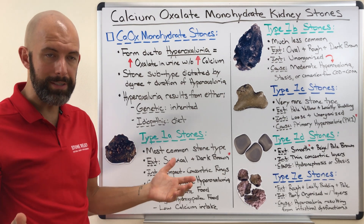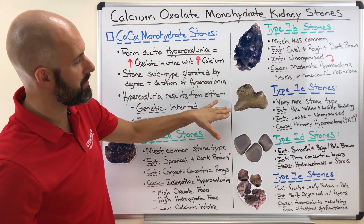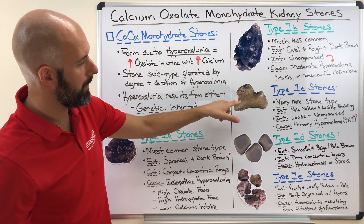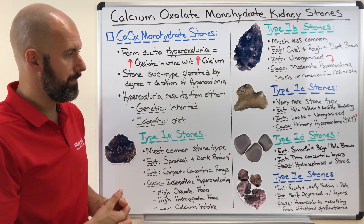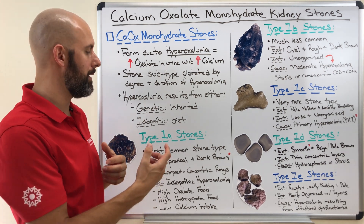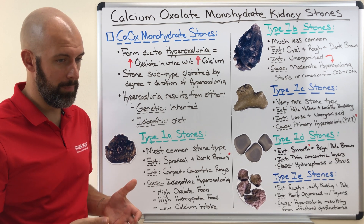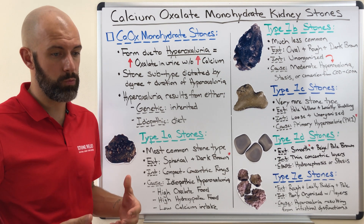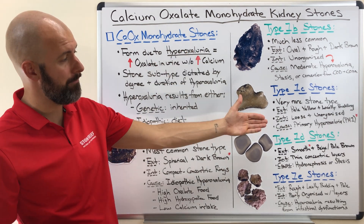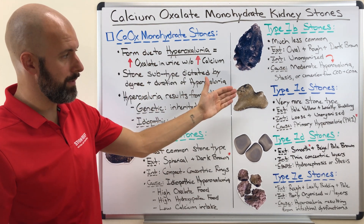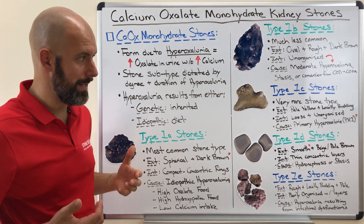Moving on to type 1C stones — this is a very, very rare stone type. You're going to see a pale yellow color; it's locally budding, so it's smooth in most places with little buds poking out in different spots, making it a very distinguishable type of stone. Internally it has a loose and unorganized structure, because this stone is not on-again off-again like 1A. It is due to a really severe condition called primary hyperoxaluria, which is inherited at birth and messes with your liver's ability to generate an enzyme that helps regulate oxalate metabolism. There's not much you can do about this because it's with you from birth.